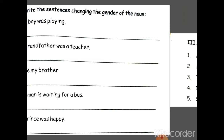You just have to check: what is the noun? And then you will change its gender. Read the first sentence: 'The boy was playing.' The noun is boy and the gender is male. So you will have to change it to female — boy becomes girl: 'The girl was playing.' Another example: 'My grandfather was a teacher.' The answer is: 'My grandmother was a teacher.' Okay, the rest of the three you will do by yourself. First, underline the noun, then change its gender.